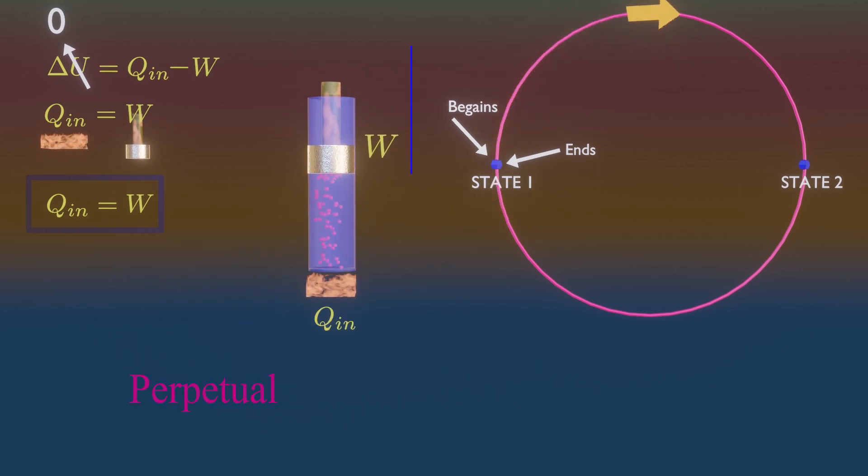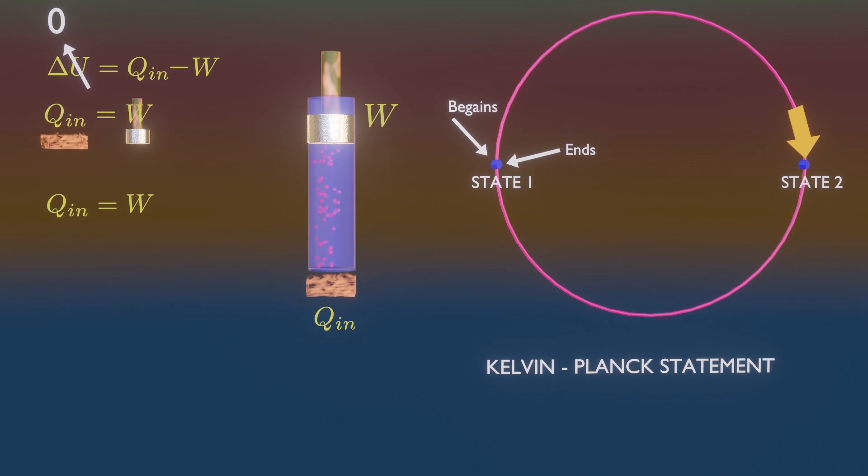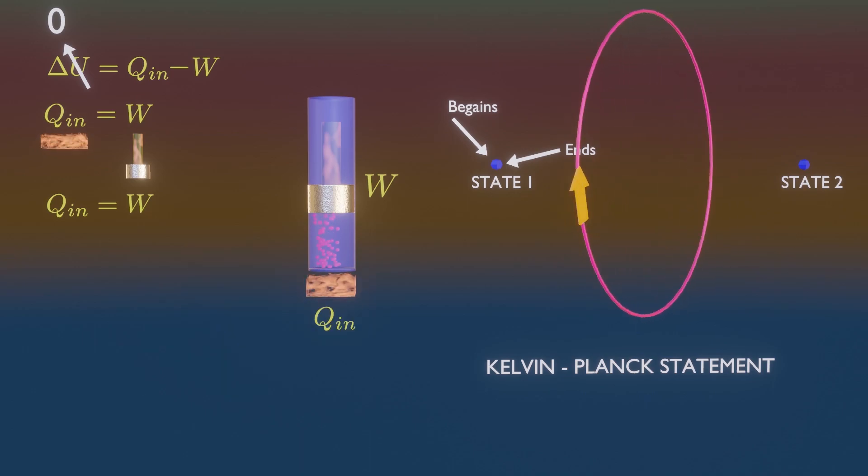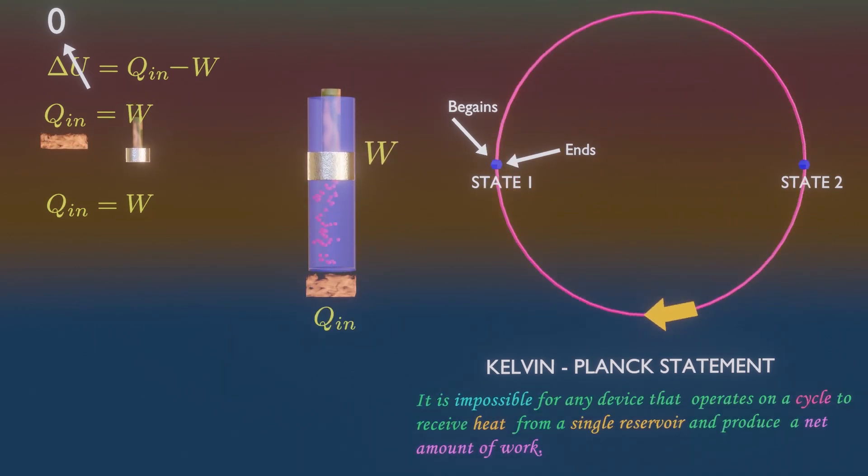These types of devices are called the perpetual motion machine. They do not exist in real life. The Kelvin-Planck statement of second law tells us about the same thing about this thermodynamic cycle.